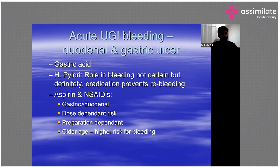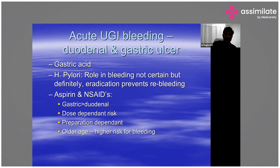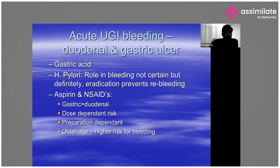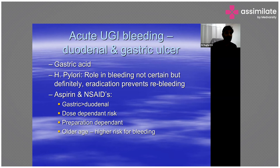H. pylori's role in bleeding is somewhat controversial, but studies have shown that eradication definitely prevents re-bleeding in many patients. Aspirin and NSAIDs cause more gastric than duodenal bleeding. Risk is dose-dependent: aspirin 325 mg carries higher risk than lower doses. Preparation also matters — enteric-coated aspirin has lower bleeding risk than non-enteric-coated.